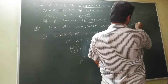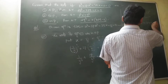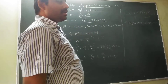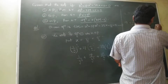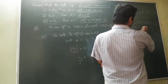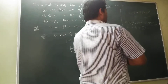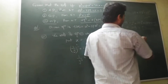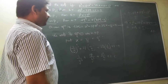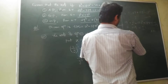So equation 2 is: Ry³ plus 3Qy² plus 3Py plus 1 equal to 0. Let this be equation 2. The roots of equation 1 are in HP, so the roots of equation 2 are in AP.